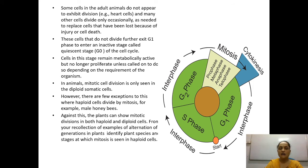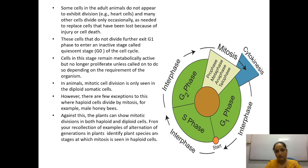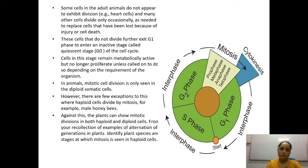Some cells in adult animals do not appear to exhibit division — for example, heart cells — and many other cells divide only occasionally. These cells divide only as needed to replace cells lost because of injury or cell death. Those cells that do not divide further exit G1 phase to enter an inactive stage called G0.